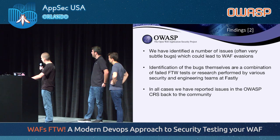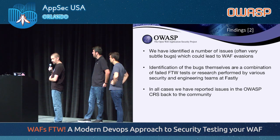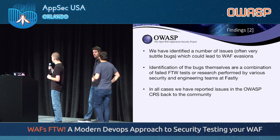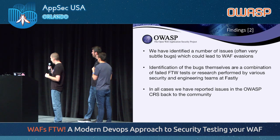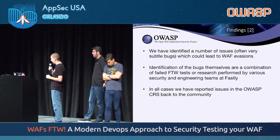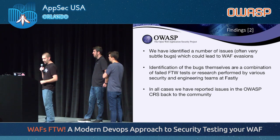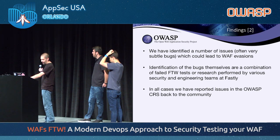We identified a number of issues that we reported upstream, combining work from our engineering teams, FTW testing, and engineering work done specifically by Federico and Eric at Fastly. One example was a protocol enforcement rule — a chained rule involving a transform to lowercase. The transform was happening in the first chain when it needed to happen in the second chain. As a result, you could bypass the rule by using an uppercase .EXE instead of lowercase .EXE.